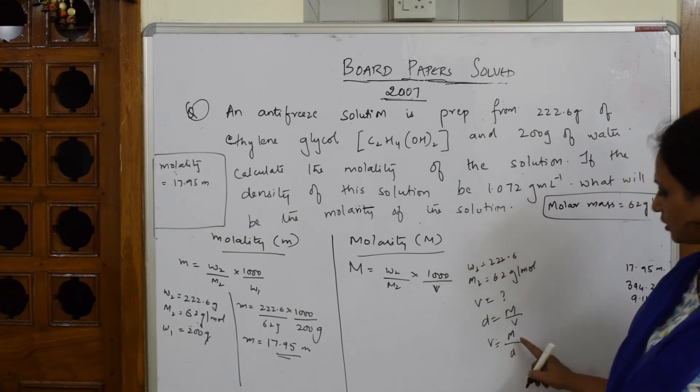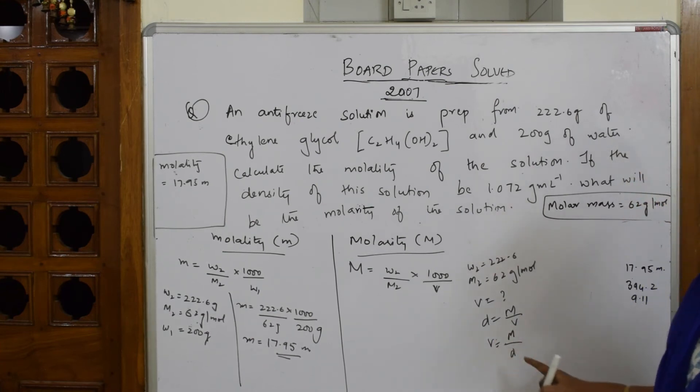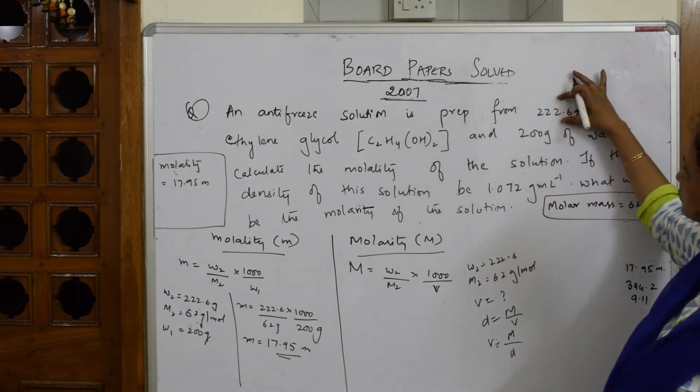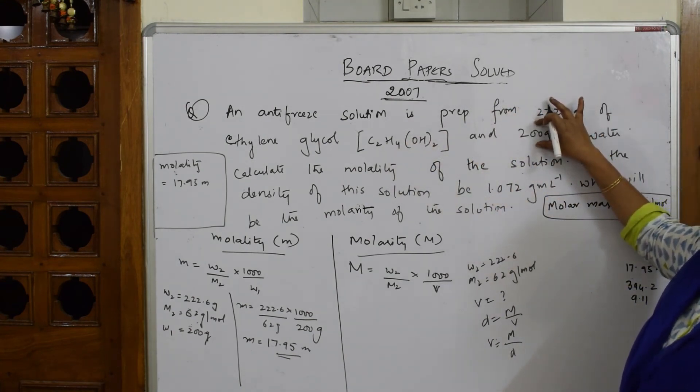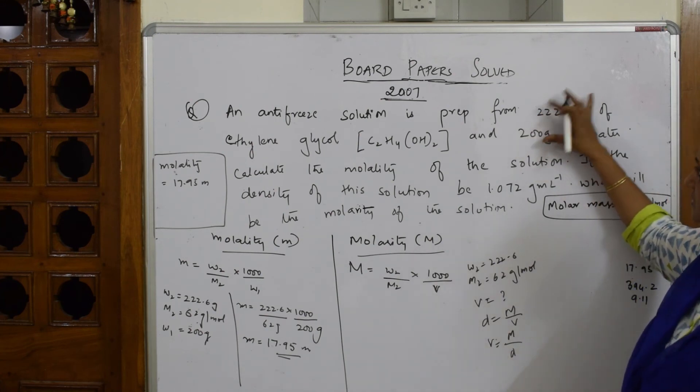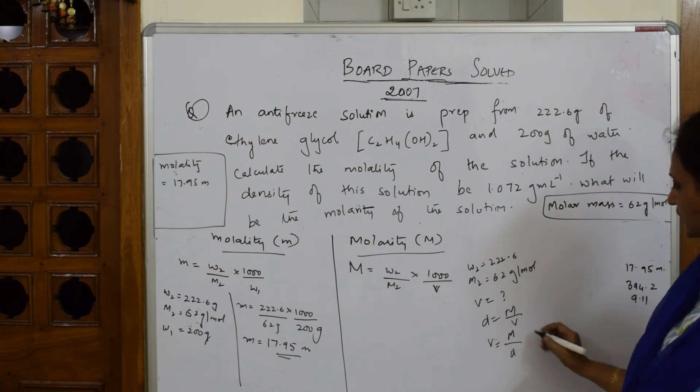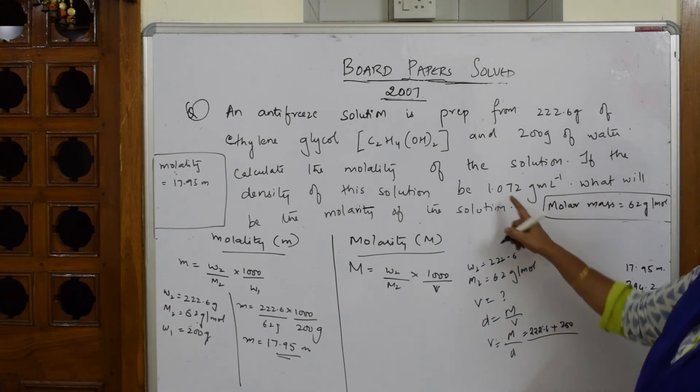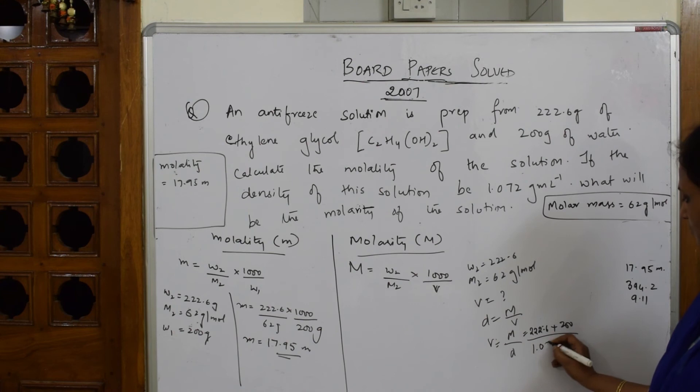Let's come back. What is the mass here? You have to be careful because they said an antifreeze solution is prepared by a combination of both. So you have to take the total mass, which equals 222.6 plus 200, total mass divided by density 1.072. When I solve this, I get an answer of 394.2 ml.